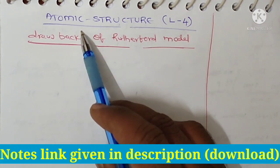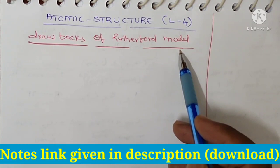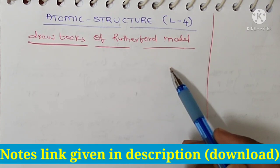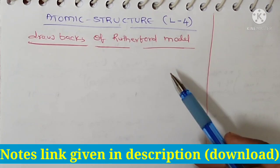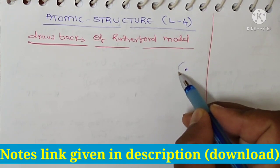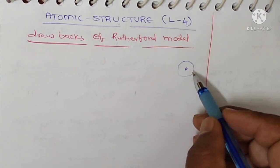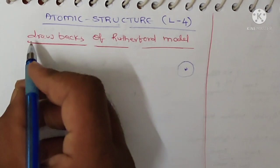Hello students, welcome to lecture 4 of atomic structure. Our topic is drawbacks of Rutherford model. In the previous lecture we discussed about the Rutherford model of atom, in which the nucleus is present in the center of the atom and around that nucleus the electrons are revolved in a circular path. Now our topic is drawbacks of Rutherford model.